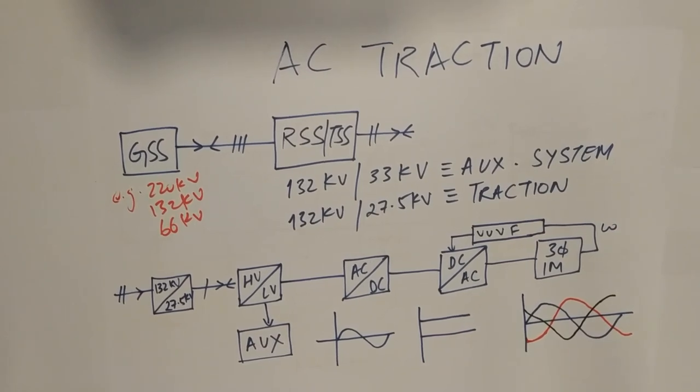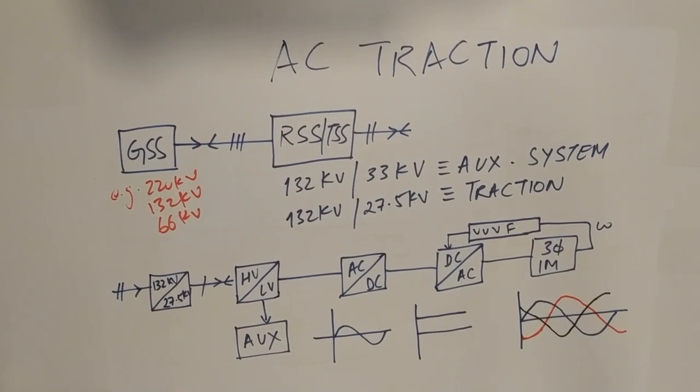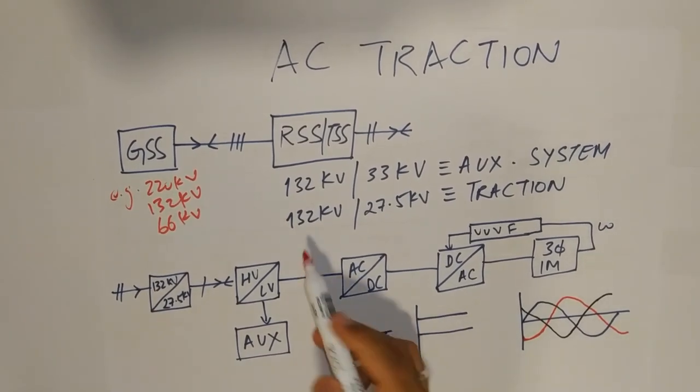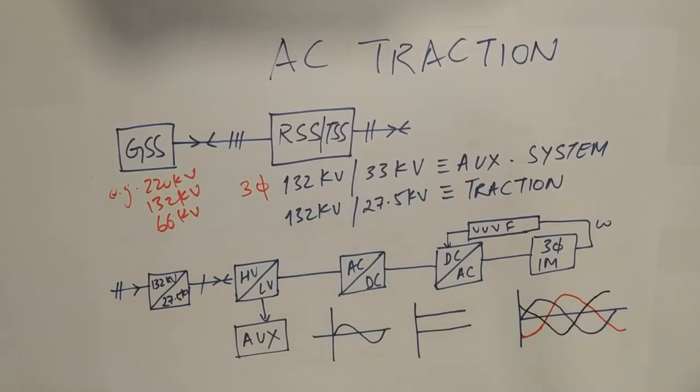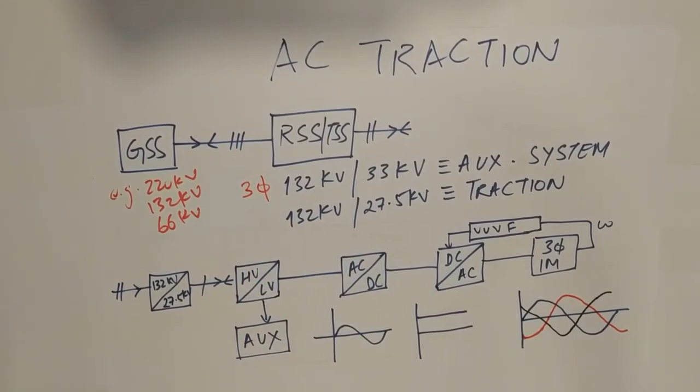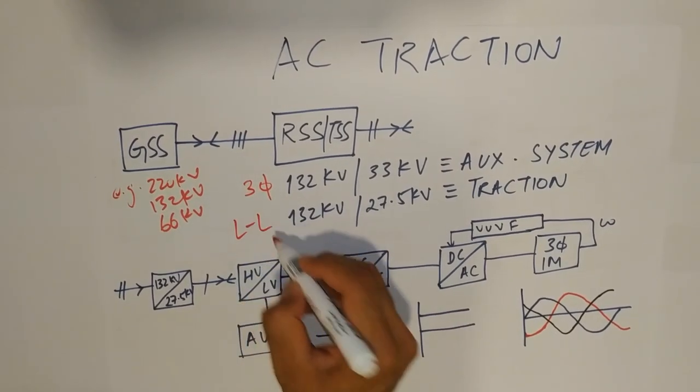For traction, 132 KV voltage is converted into 27.5 KV. Now, in this auxiliary, this is a three-phase voltage, a three-phase supply. Whereas, in traction, it is line-to-line. There is no third phase.